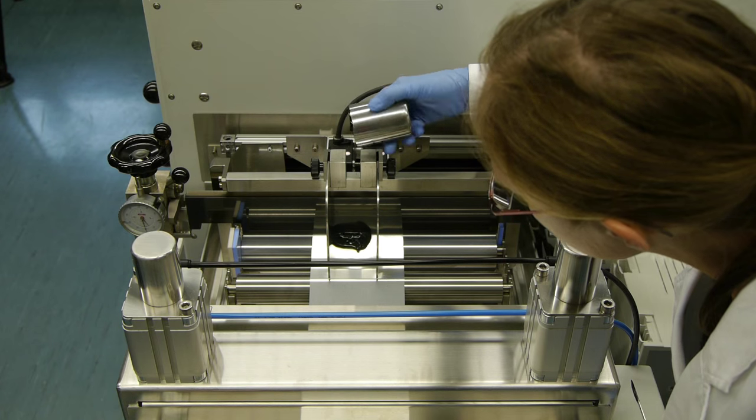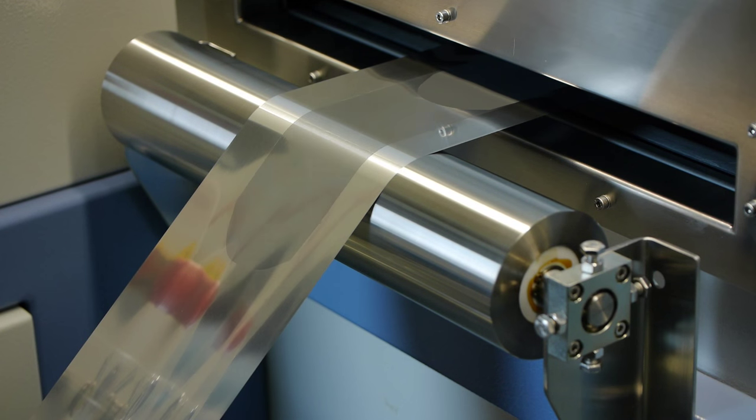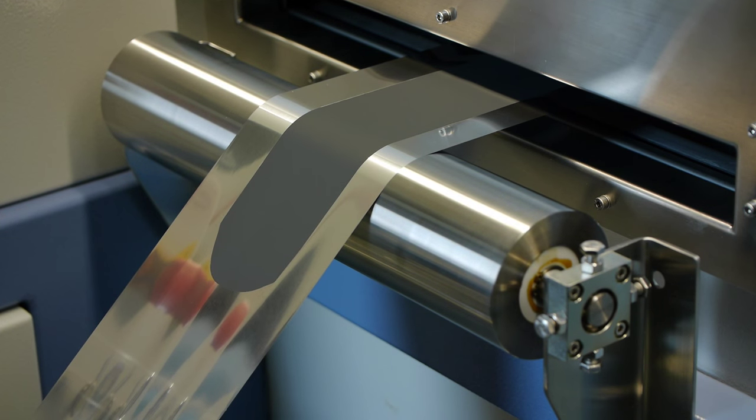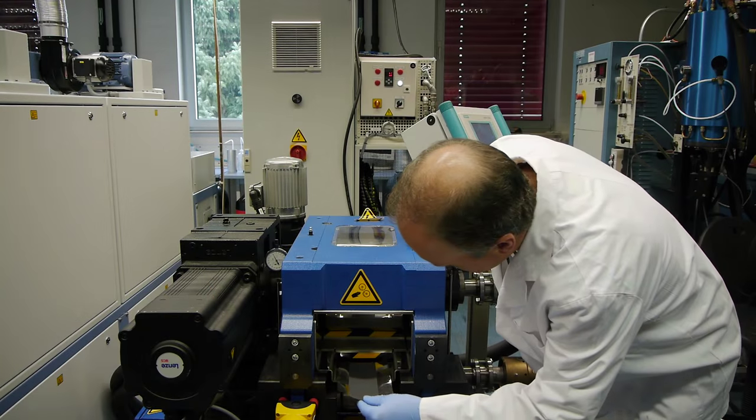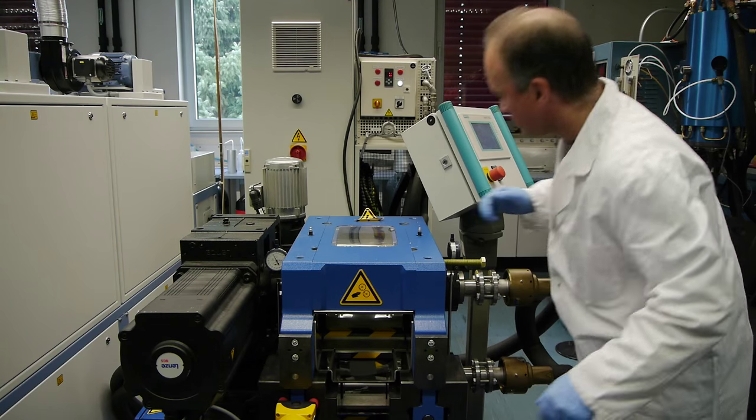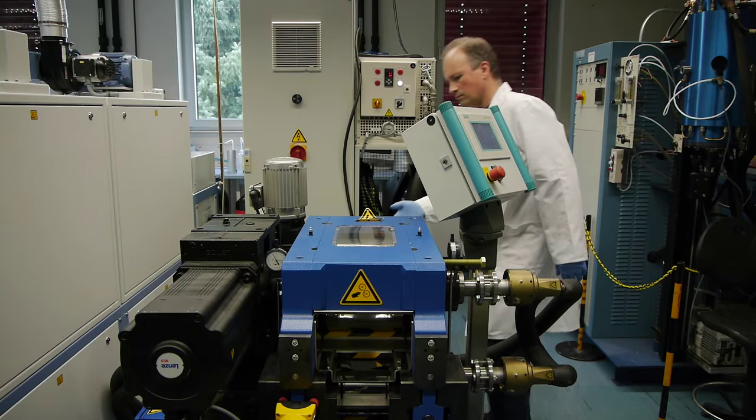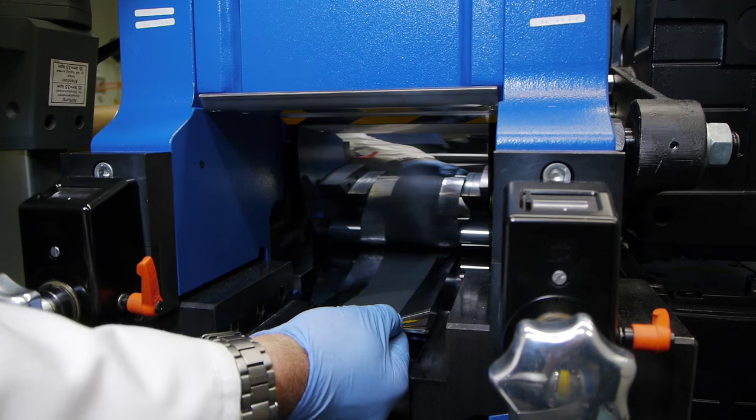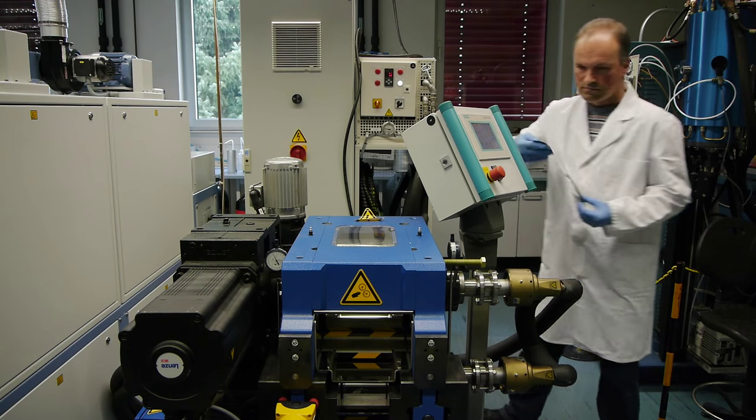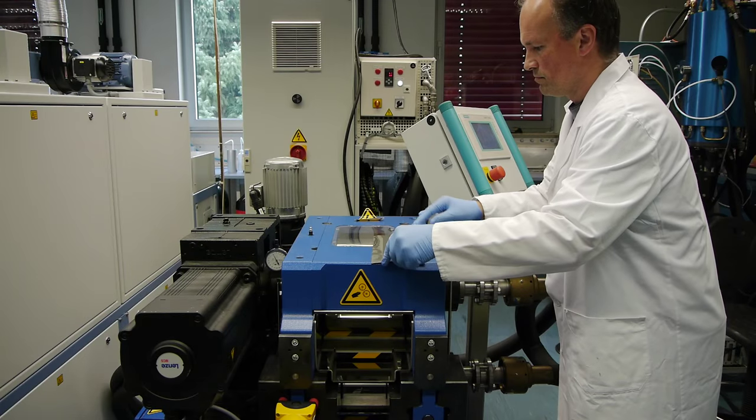The wet cathode coating now passes through a number of drying chambers, where the solvent is evaporated. A scientist now places the coated electrode between two rollers, by which it is compressed at high pressure. This is called calendaring. The aim of this process is to achieve the targeted porosity and layer thickness for the electrode.